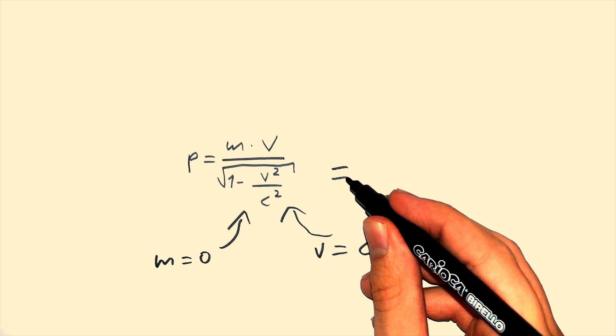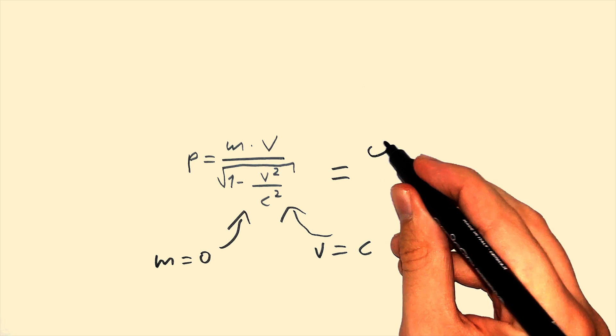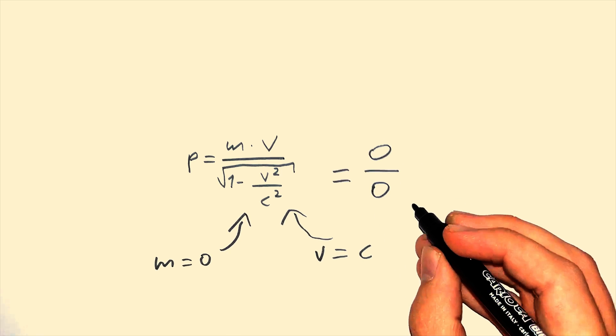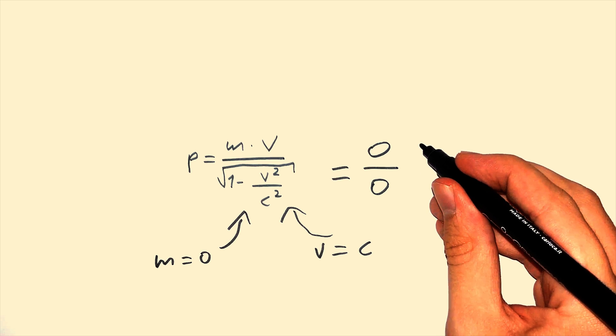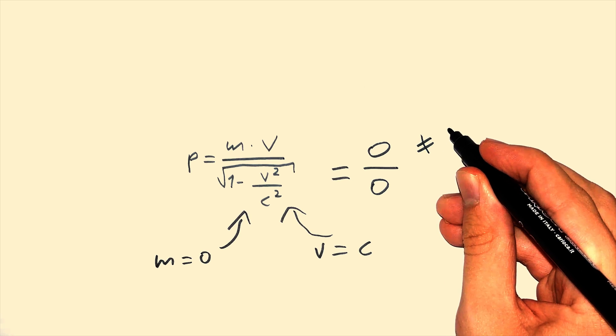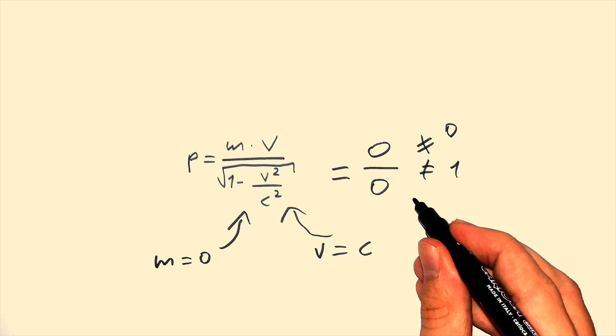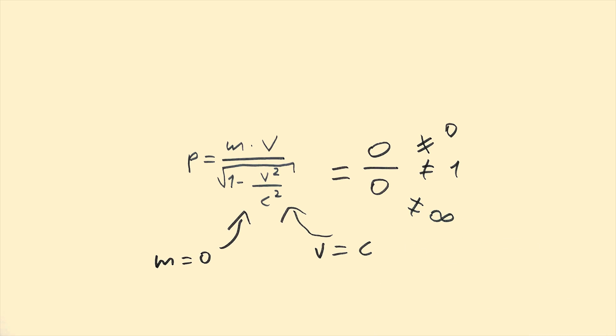And if you use 0 for mass and c for velocity, which is the case for photons, it results in momentum being 0 over 0, which in math such a term is indeterminate, not 0, not 1 and not infinity, simply indeterminate.